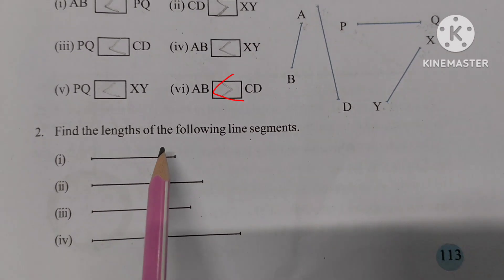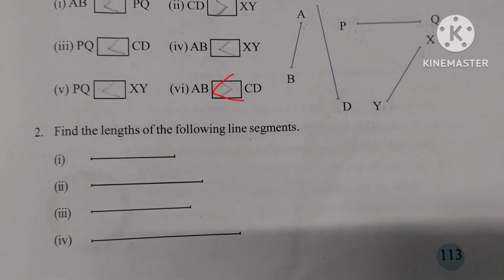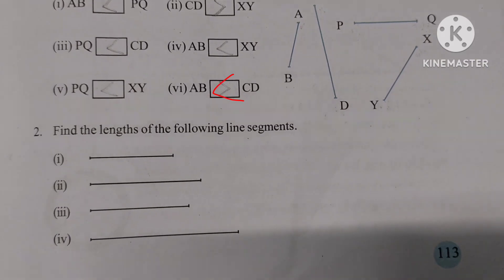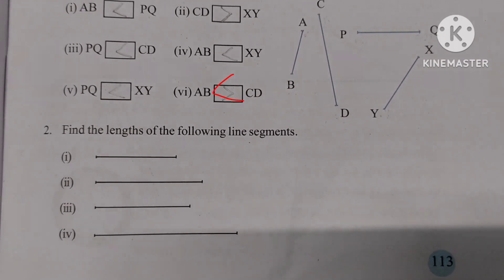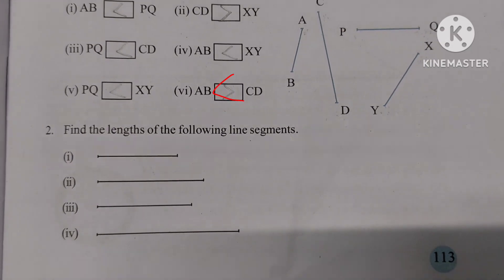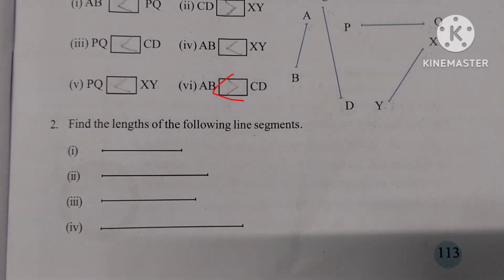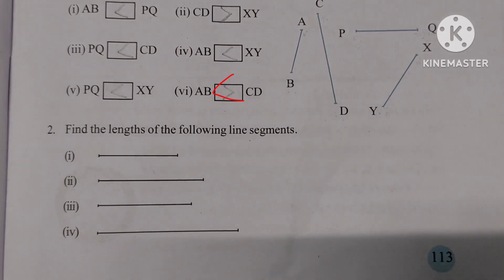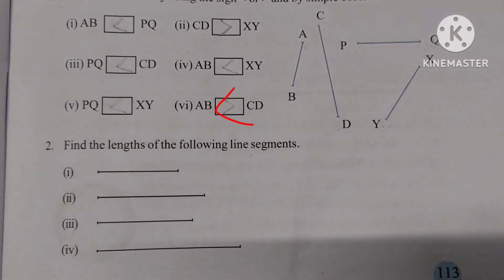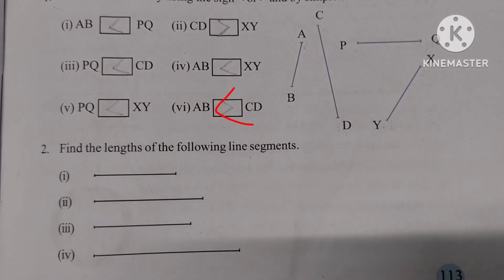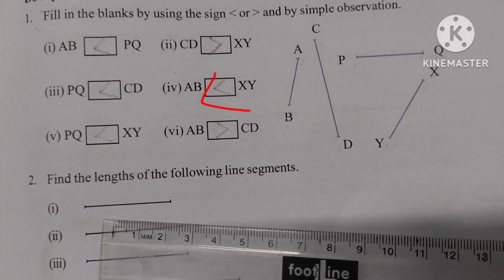Number 2: Find the lengths of the following line segments. We have learned that we can find the length of a line segment by using a ruler or divider. We can measure with the help of a ruler, which means a scale.